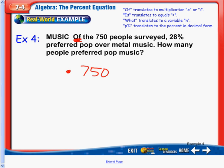Now, thinking about it a little differently, is there a way we can rephrase this question and still mean the same thing? The answer is yes. We can say, 28%, take this, and bring it right over here. 28% of the 750 people surveyed preferred pop over metal music. That makes sense, and it didn't change the meaning of the sentence at all.